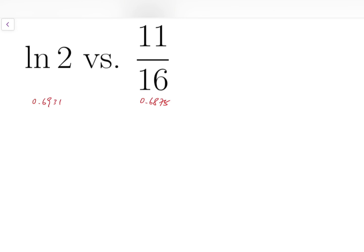The numerical values of these two numbers are 0.6931 for natural log of 2 and 0.6875 for 11 over 16. So you can see the difference is actually pretty small.